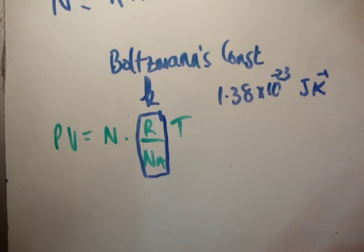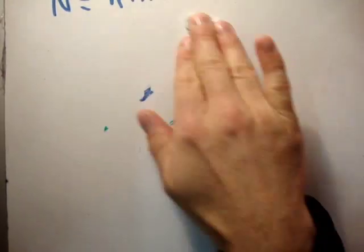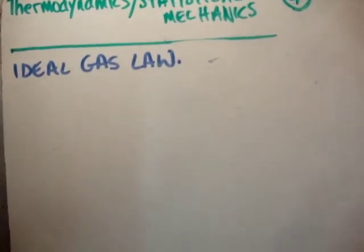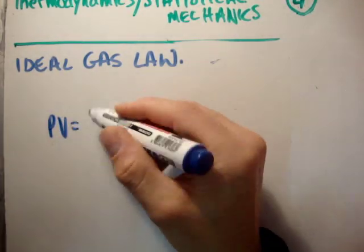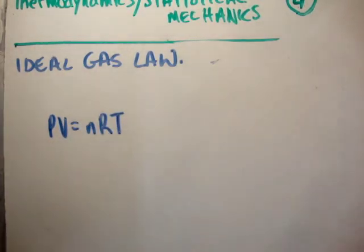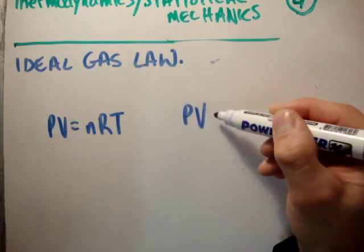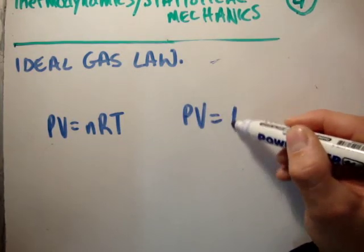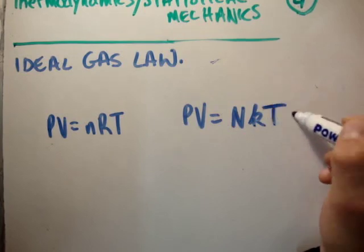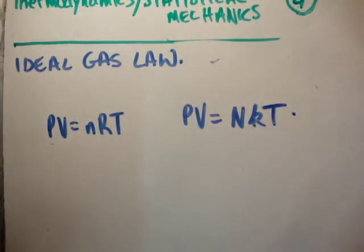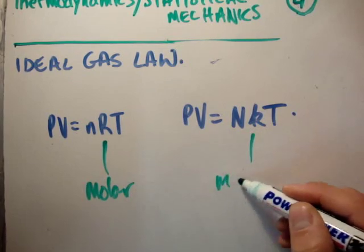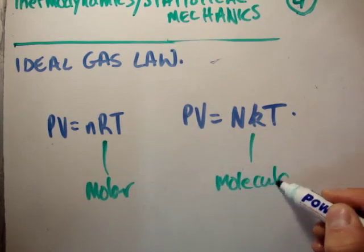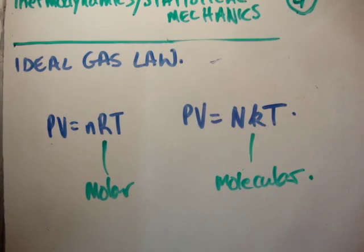So if you write it this way, we have a new ideal gas law. Well, when I say new, it's just a new way of writing the ideal gas law. We can have PV is equal to small n times the molar gas constant times temperature, or PV is equal to capital N, number of molecules, times Boltzmann's constant times T.